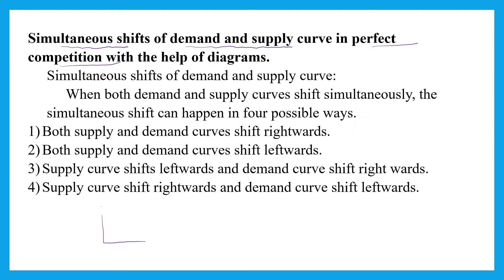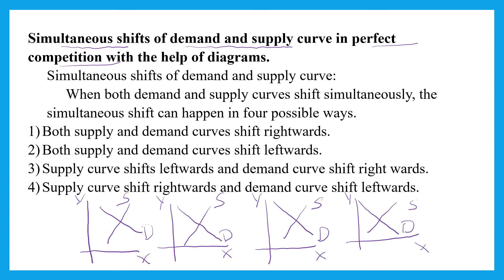To understand this, you can see below the diagrams. I have written demand and supply curve. This is the right side and this is the left side. If demand curve shifts, you can see both demand and supply curve shift towards the right side. This existing demand curve will shift towards the right side, and supply curve also shifts towards the right side. This we call it as a shift of both demand and supply rightward.